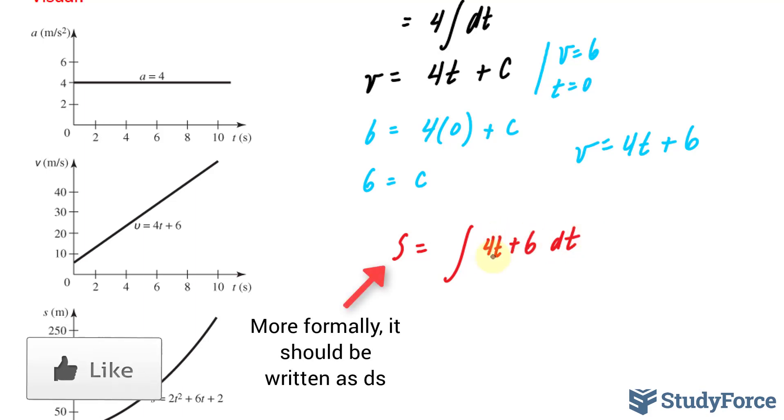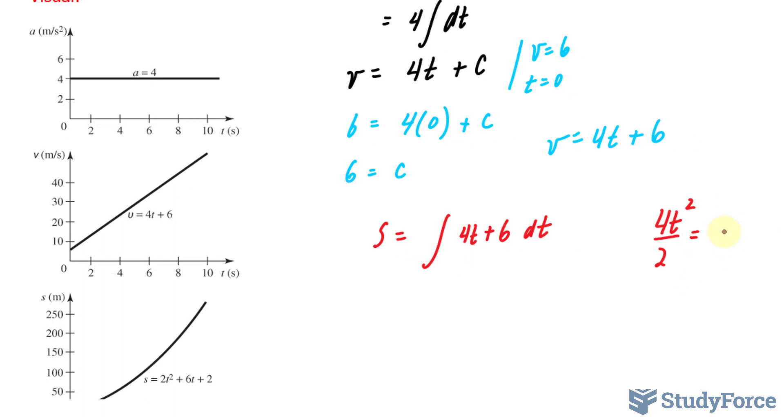The integral of 4t becomes 4t squared over 2, which reduces down to t squared over 2. And the integral of 6 is simply 6t, plus c.